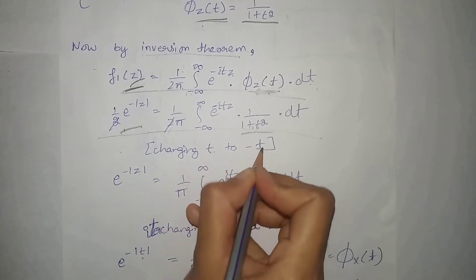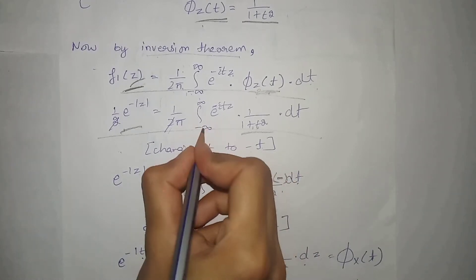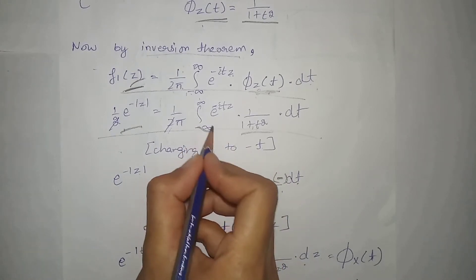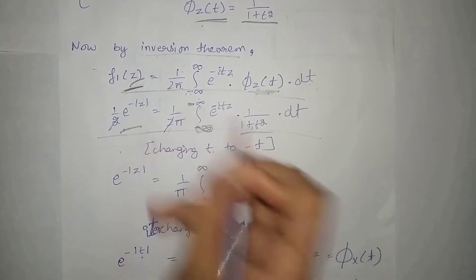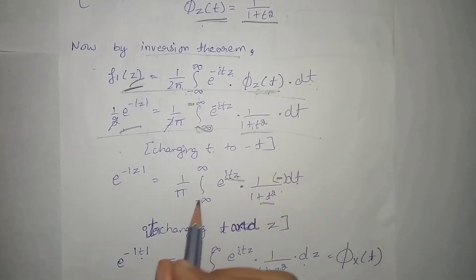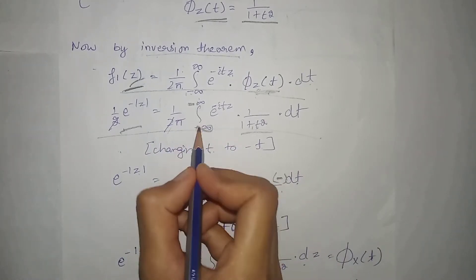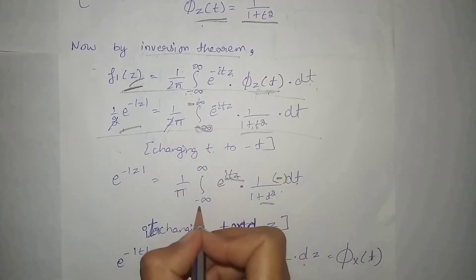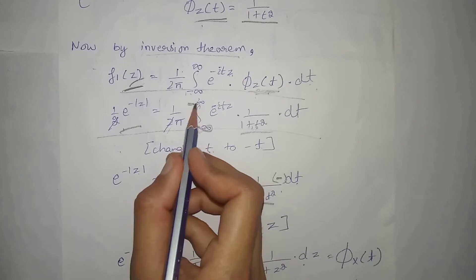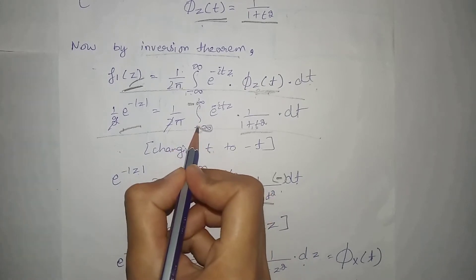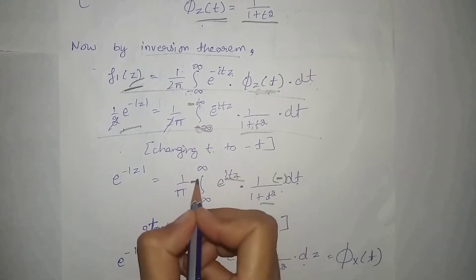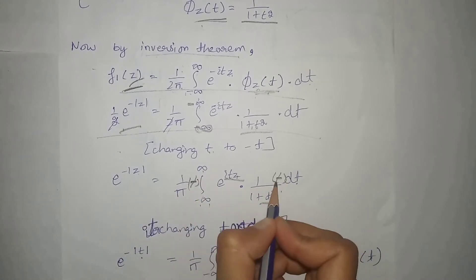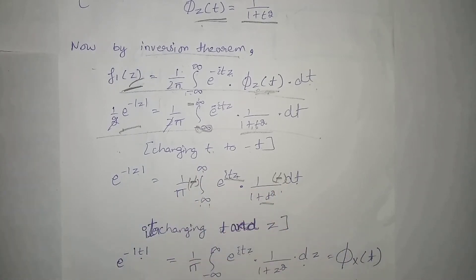If we put minus t in place of t, then the limits also change: minus infinity becomes plus infinity and infinity becomes minus infinity. Now if we interchange these limits — since we keep limits from smaller to larger — when we interchange them, we get a negative sign which cancels with the existing minus, so we get the positive answer.